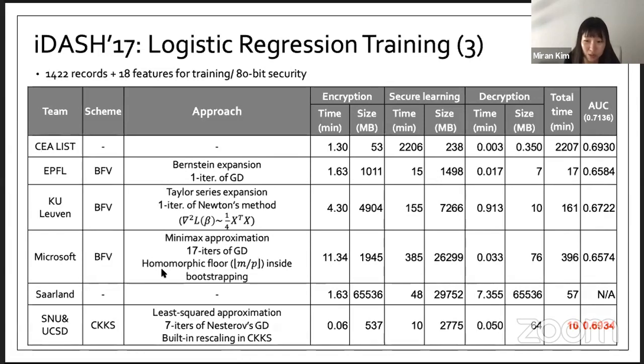Microsoft also used BFV scheme with minimax approximation. The key feature of their solution is that they apply the bootstrapping technique. This bootstrapping technique is usually used to reduce the noise after computation, so we can perform arbitrary computation on encrypted data. But they modified bootstrapping in order to merge with a flooring operation in one step. In their protocol, they perform bootstrapping right after each multiplication so they can handle flooring operation as well as bootstrapping.